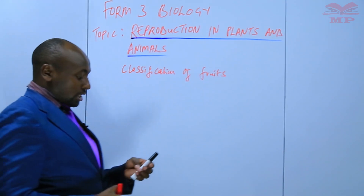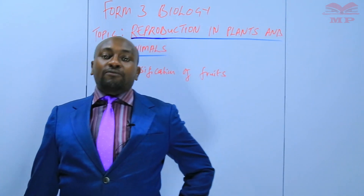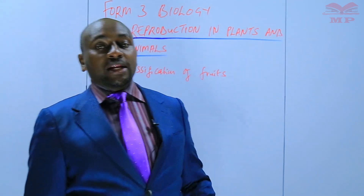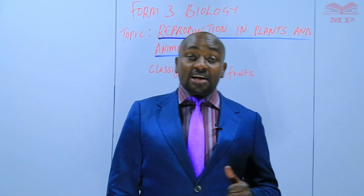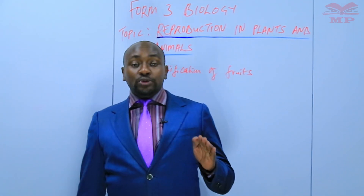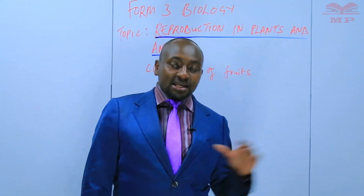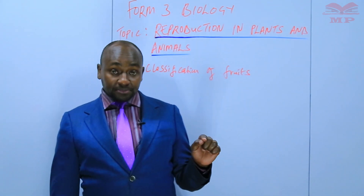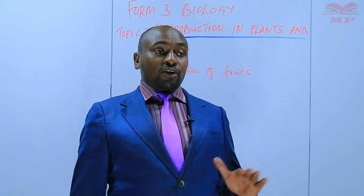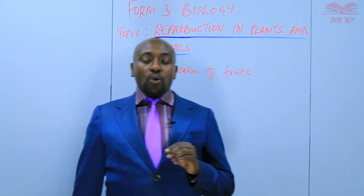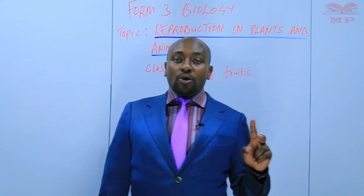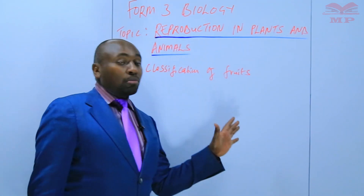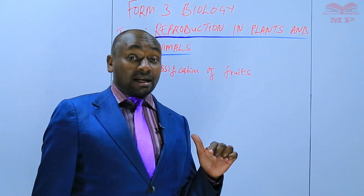Up to this point we want to classify the fruits broadly into two. We have what we call the succulent fruits and we have the dry fruits. When you go to the succulent fruits we further classify them into what we call berries and drupes. On the other side, the dry fruits we subdivide into dehiscent and indehiscent. We are going to have a chart that summarizes how the fruits are classified.